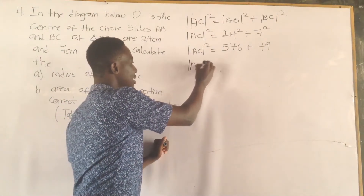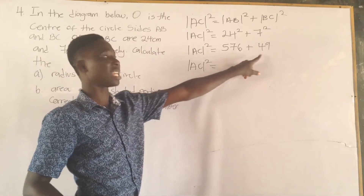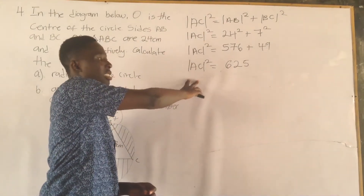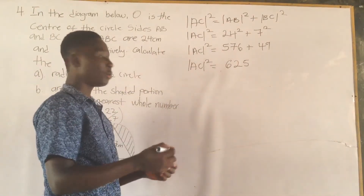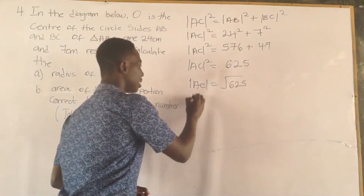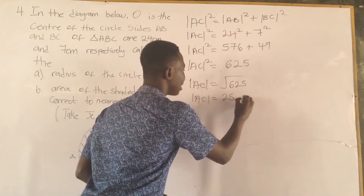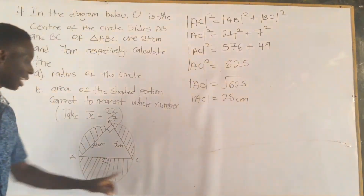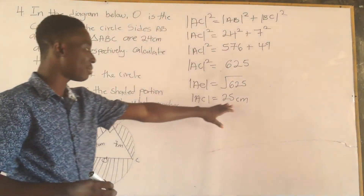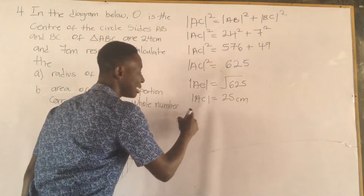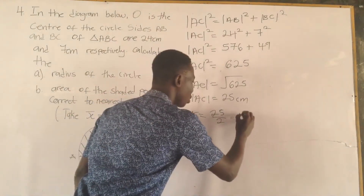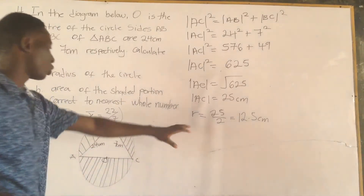So AC squared is equal to 576 plus 49, which gives us 625. Now we want AC, not AC squared, so we take the square root. AC is equal to the square root of 625, which is 25 centimeters. To get the radius, which is half of the diameter, we divide by 2: radius R equals 25 divided by 2, which gives us 12.5 cm.